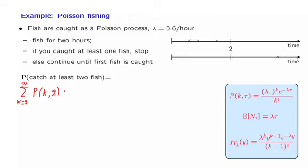An alternative way of writing this expression, so that we do not have to evaluate an infinite sum, is one minus the probability of catching zero fish minus the probability of catching one fish.